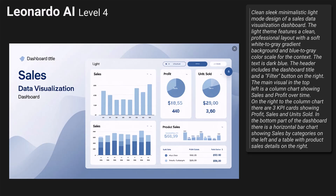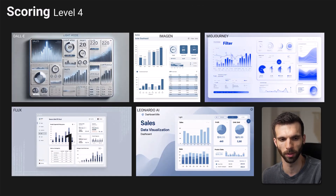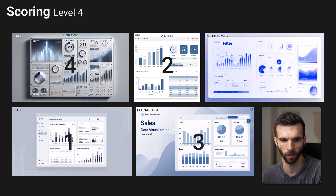Leonardo AI. This one looks like a website landing page again but at least it also shows a dashboard. There is indication it's a sales dashboard. In the header there is a title and buttons on the right side, though you can't confirm a filter button. On the top left there is a column chart. On the top right there are only two KPIs — profit and units sold — plus some donut charts not part of the prompt. In the bottom left there is a sales column chart rather than a bar chart, and in the bottom right a small table plus another visual. The dashboard part itself is not bad — nice layout and colors, visuals mostly clear, doable in Power BI. For level 4: Flux has the lead overall although Imagen followed the prompt better, so Imagen is second, Leonardo AI is third, DALL-E is fourth, and Midjourney is fifth.